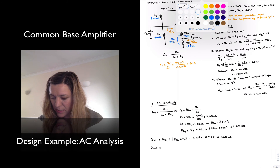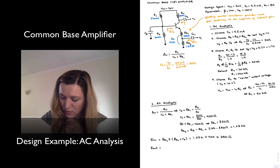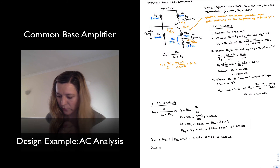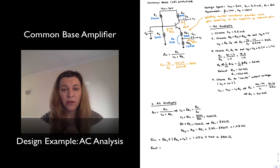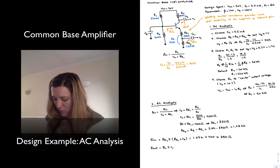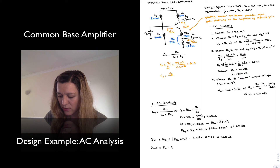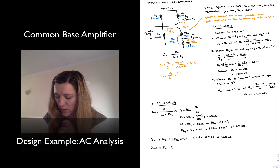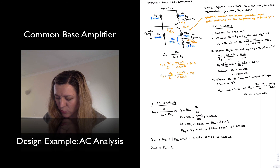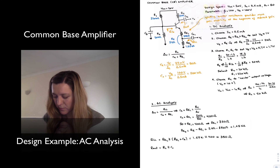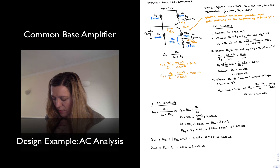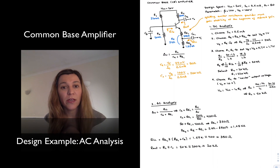The output resistance is the resistance looking at the collector terminal. It's RC connected to an AC ground in parallel with little ro, so RC in parallel with little ro. Little ro is a small signal parameter dependent on the Q point: it's the Early voltage divided by the collector current. With Early voltage of 100 volts and collector current of 0.5 milliamps, ro equals 200 kΩ. So the output resistance is 20 kΩ in parallel with 200 kΩ, which we can approximate as RC, or 20 kΩ.